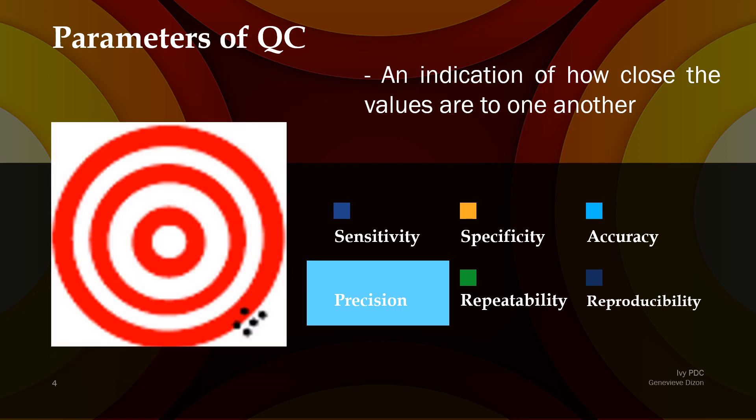For the target chart, the center is still the true value, but for precision we are looking at how the results relate to each other. There is precision in testing when, for example using fasting blood sugar, you test 450 the first time, then the second time it's close — 452 — and the third time it's close again — 440 — and so on. When you repeat the tests, they are very close to each other, and that is precision.